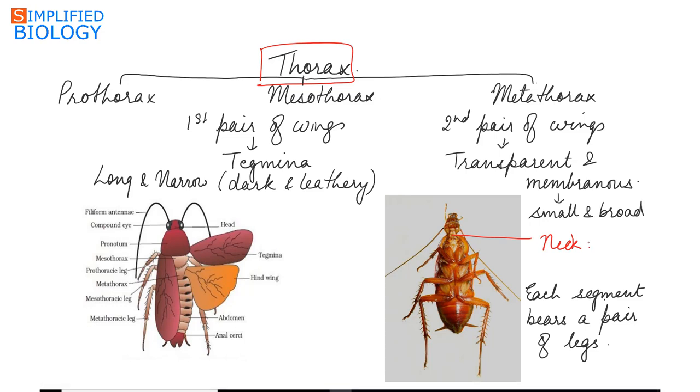The thorax can be divided into three parts: prothorax, this is the prothorax, mesothorax, and metathorax. Prothorax, mesothorax, and metathorax.